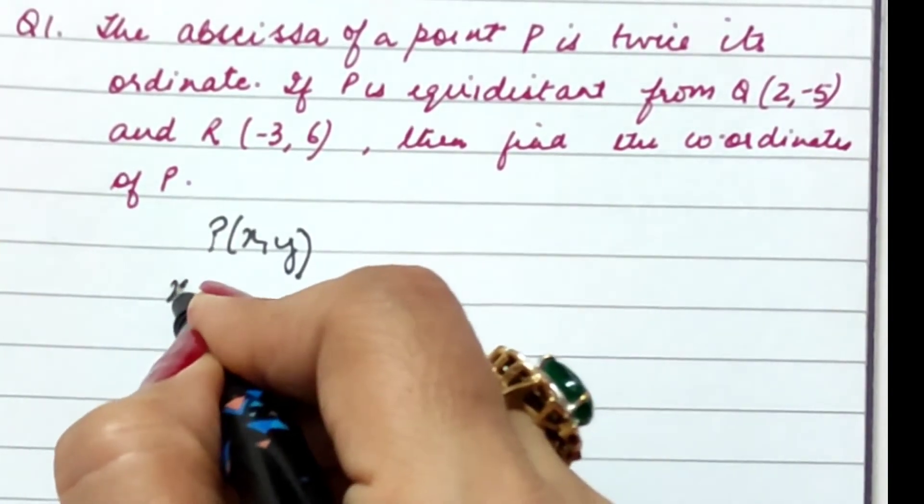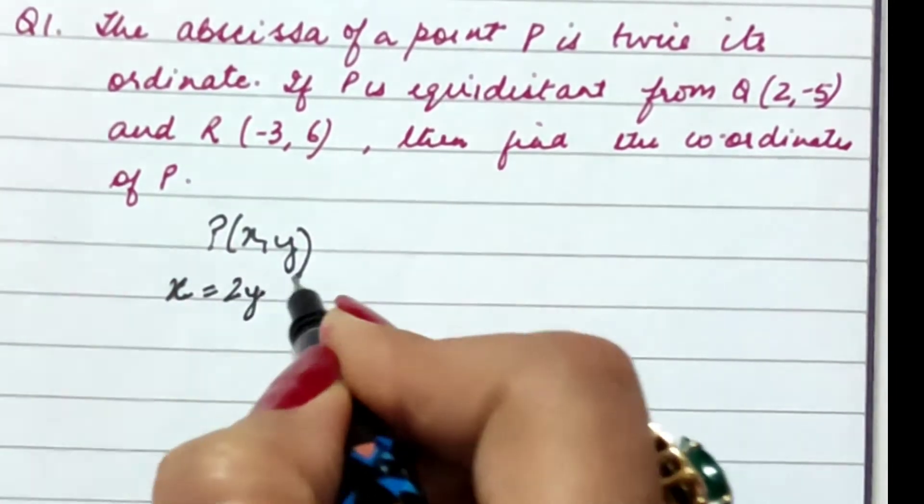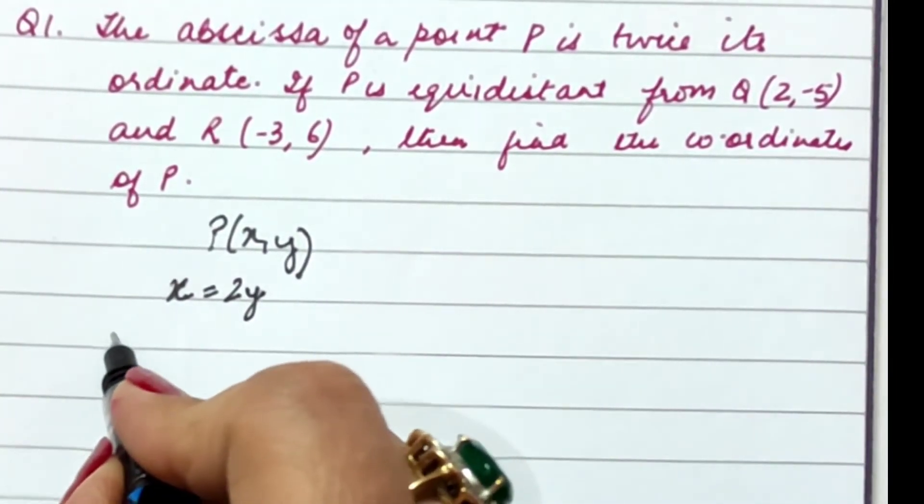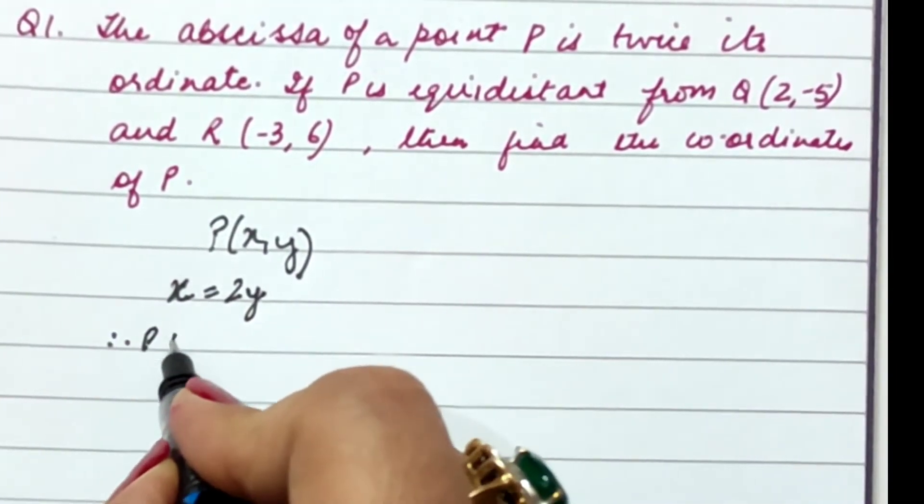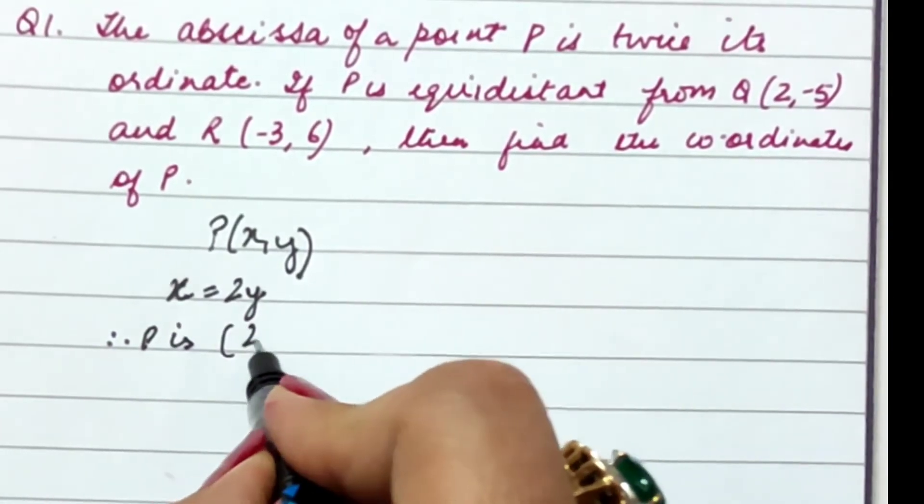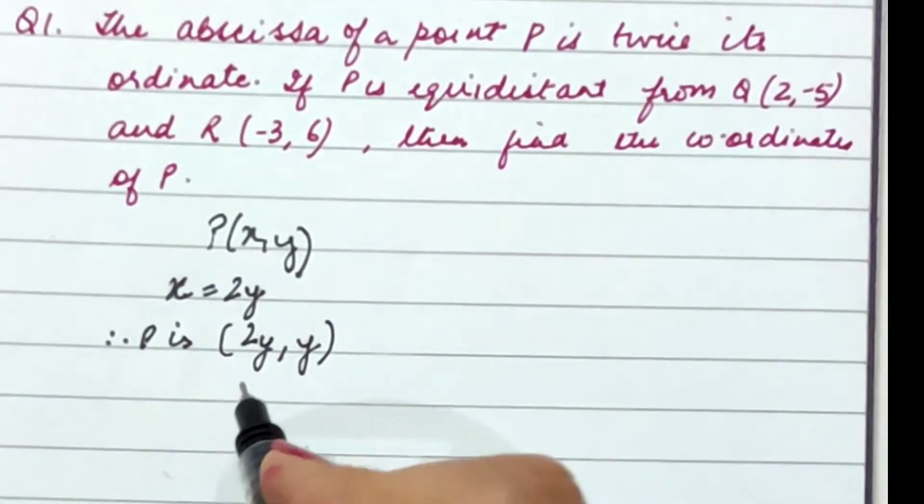It is given to us that x is equal to 2y. That means the point P becomes, therefore P is (2y, y). Now what more is given to us?